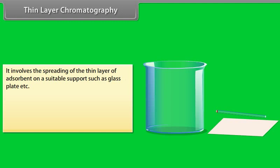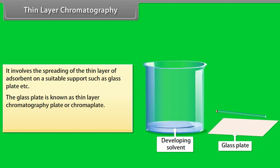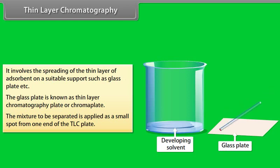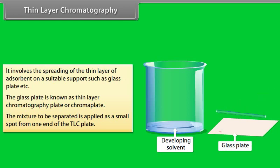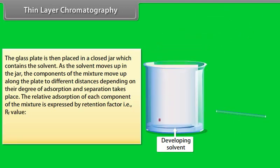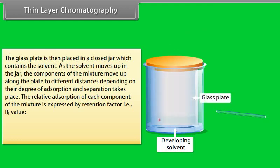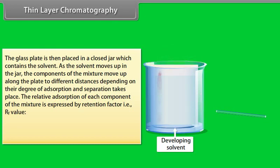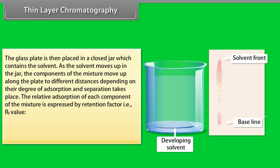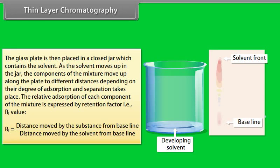Thin Layer Chromatography (TLC): It involves spreading a thin layer of adsorbent on a suitable support such as a glass plate, known as the TLC plate or chroma plate. The mixture to be separated is applied as a small spot from one end of the TLC plate. The glass plate is then placed in a closed jar containing the solvent. As the solvent moves up, the components of the mixture move up along the plate to different distances depending on their degree of adsorption, and separation takes place. The relative adsorption of each component is expressed by the Retention Factor, Rf = distance moved by the substance from baseline ÷ distance moved by the solvent from baseline.